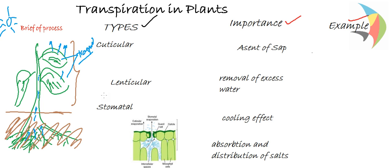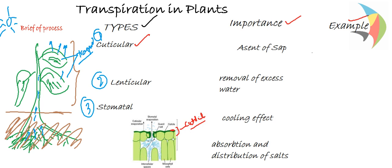This transpiration can be divided into three types: cuticular transpiration, lenticular transpiration, and stomatal transpiration. Cuticular transpiration takes place from the upper or lower surface of the leaf — specifically from the cuticle part. This amounts for approximately 20% of water loss in the plant.